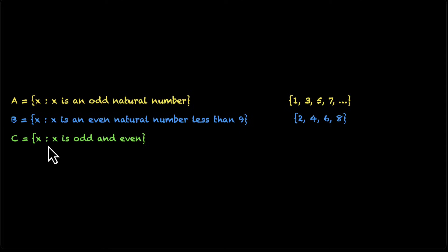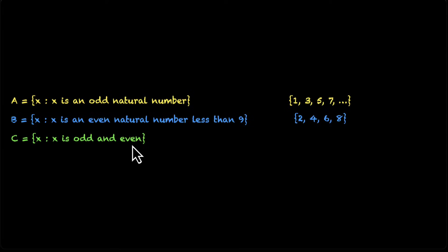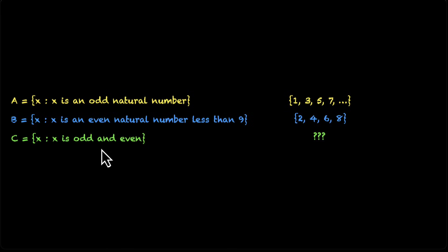We are looking for all x such that x is odd and even. How can x be odd and even? It can't. Either it can be odd or it can be even — it can never be both. So how many elements do we have? We have no elements here, we have 0 elements. This set is an empty set.